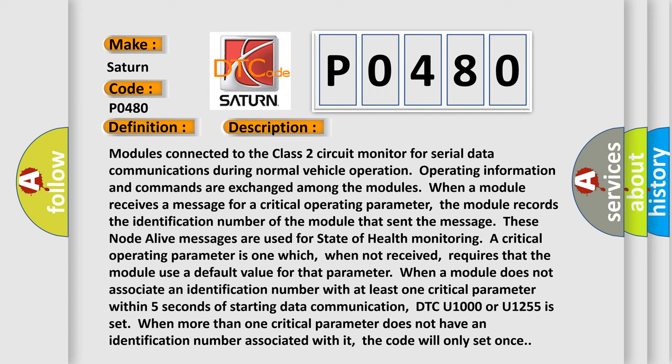When a module does not associate an identification number with at least one critical parameter within five seconds of starting data communication, DTC U1000 or U1255 is set. When more than one critical parameter does not have an identification number associated with it, the code will only set once.